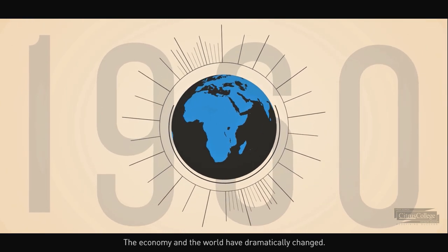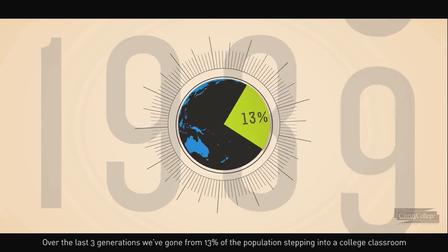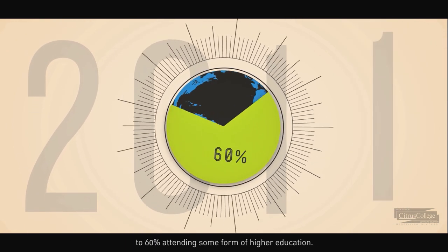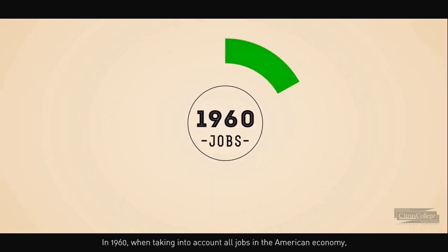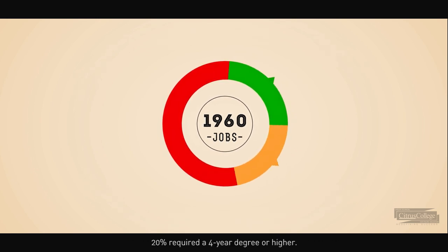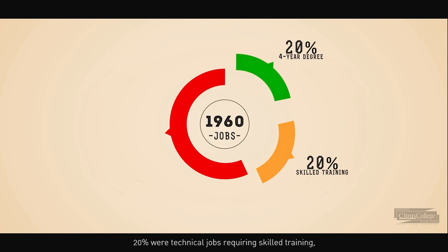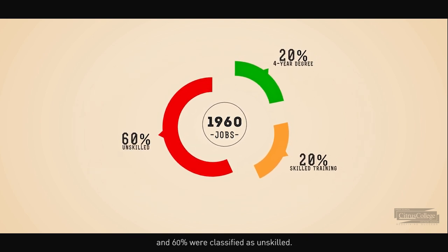The economy and the world have dramatically changed. Over the last three generations, we've gone from 13% of the population stepping into a college classroom to 60% attending some form of higher education. In 1960, when taking into account all jobs in the American economy, 20% required a four-year degree or higher, 20% were technical jobs requiring skilled training, and 60% were classified as unskilled.